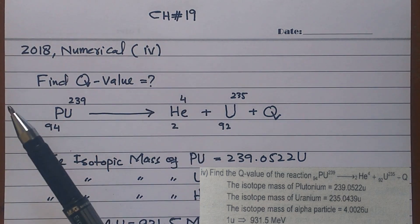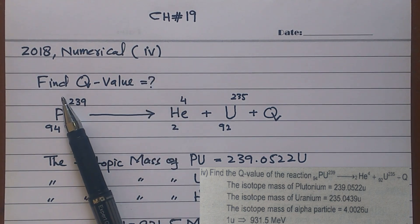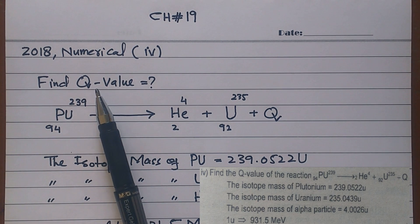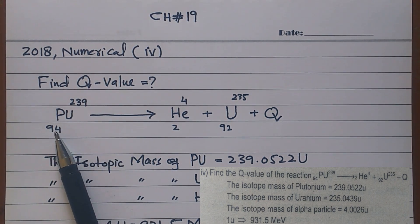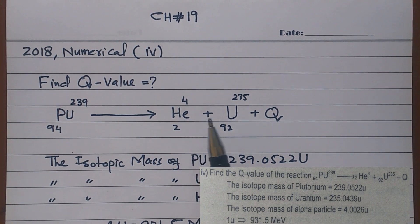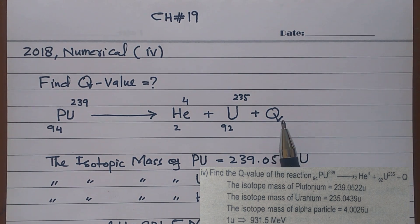In chapter 19 of 2018, he says find the Q-value. The Q-value is exactly the same way we use binding energy. You can see the equation - this is the plutonium which is breakdown of an alpha particle and uranium. When the plutonium decays, the energy is released by the Q-value.